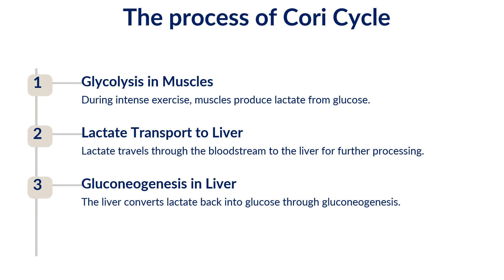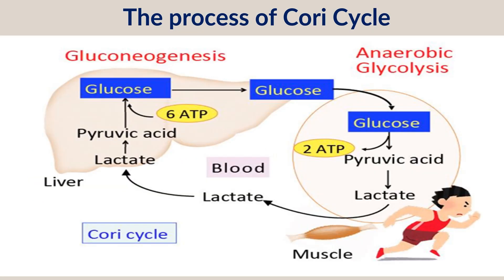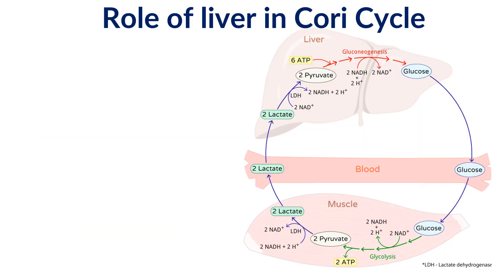So the glucose uptake by muscle cells is the third part of this cycle. Anaerobic glycolysis converts glucose to lactic acid in the muscles; lactic acid, being a dead-end product, is transported to the liver; the liver performs gluconeogenesis converting it to glucose; and that glucose is again transferred to the muscles. This is an overall cyclic process occurring in our body, called the Cori cycle.